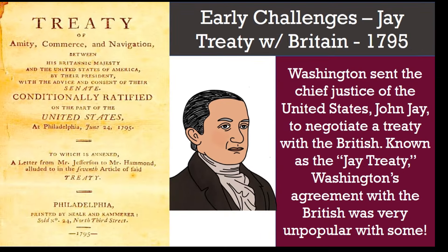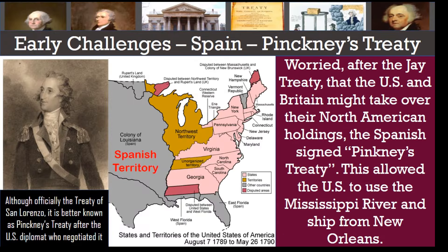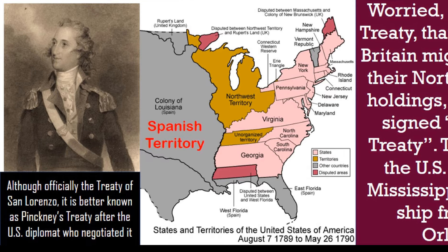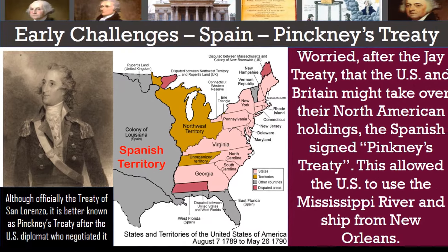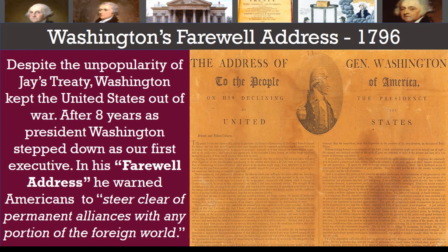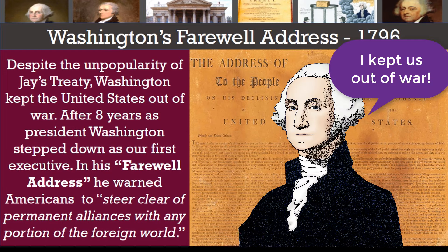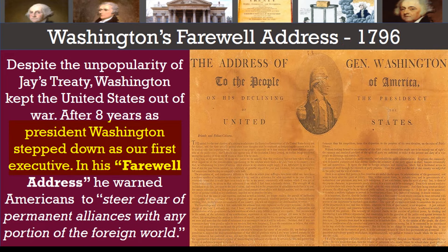Washington's agreement with the British was very unpopular with some, especially Jefferson's Republicans. Worried after the Jay Treaty that the U.S. and Britain might take over their North American holdings, the Spanish signed Pinckney's Treaty, which allowed the U.S. to use the Mississippi River and ship from New Orleans — a treaty applauded by Western farmers. Despite the unpopularity of Jay's Treaty, Washington kept the United States out of war. After eight years as president, Washington stepped down as our first executive.